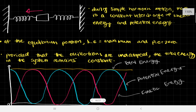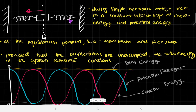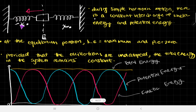In simple harmonic motion, an object goes through a lot of different stages. The central position is the equilibrium position. When it's at its maximum displacement from the equilibrium position, it has zero velocity, and then it starts accelerating. It has the highest velocity at the equilibrium position, and then it goes to its other maximum displacement, where it also has zero velocity for an instant — an instantaneous rest.